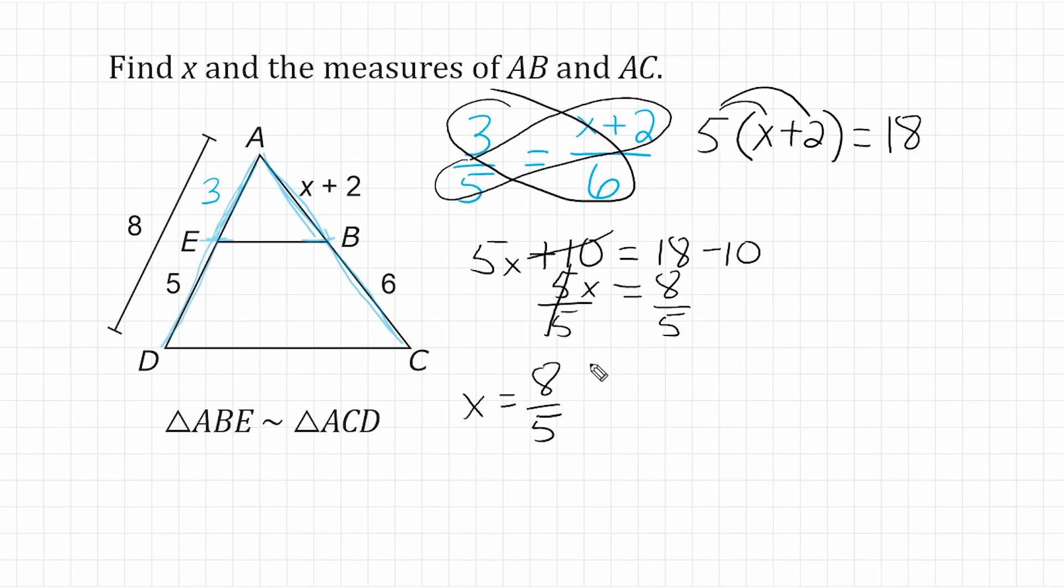All right. Now that we know what x is equal to, we can plug that in for x and figure out the length of AB. And then we can add that to 6 to find the length of AC. So let's start with line segment AB, which is equal to x plus 2. We're going to substitute in for x, 8 fifths, and add that to 2.